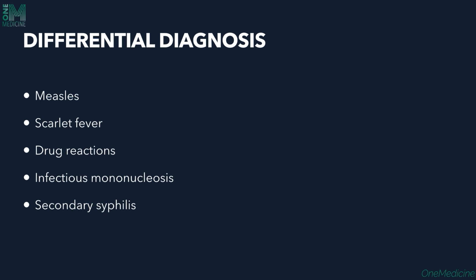Differential diagnosis includes any disease presenting with maculopapular rash — mostly viral infections in childhood. These include measles, scarlet fever, certain drug reactions, infectious mononucleosis, and secondary syphilis.